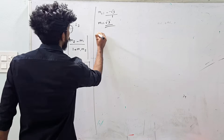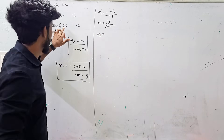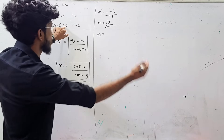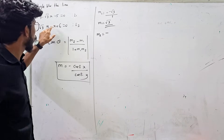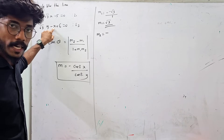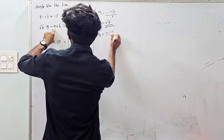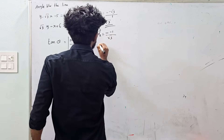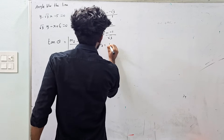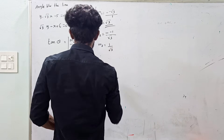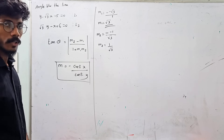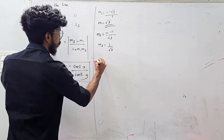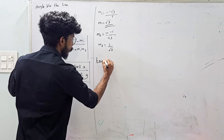At the same time, m2. Similarly, the slope of m2: the equation is minus of coefficient of x, which is minus 1, divided by y coefficient, which is root 3. Minus minus gives plus, so m2 equals 1 by root 3. Clear? Then tan θ equals...